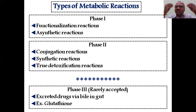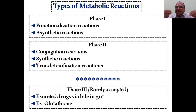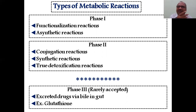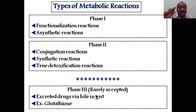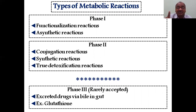There are mainly three phases of biotransformation reactions, also called metabolic reactions. Phase 1 and Phase 2 are compulsory; Phase 3 is also there but rarely accepted — some textbooks do not accept Phase 3. Phase 1 is also called functionalization reaction. It makes a prodrug into a drug; for example, aspirin is converted into salicylic acid due to Phase 1. That's why Phase 1 reactions are called functionalization reactions. Phase 1 reactions are also called asynthetic reactions.